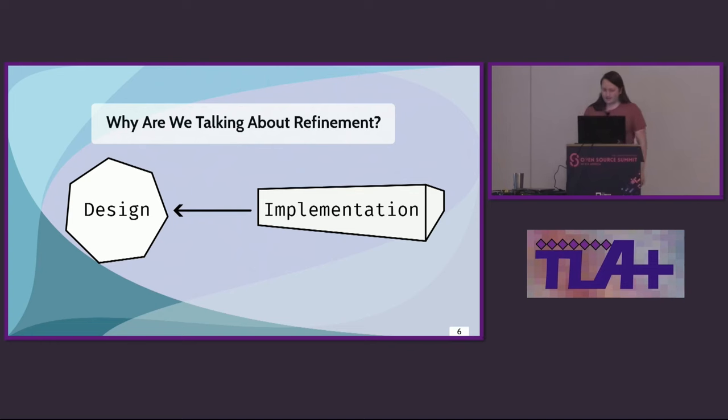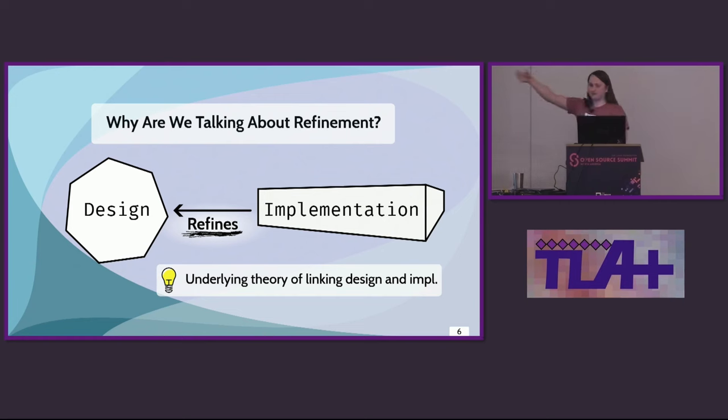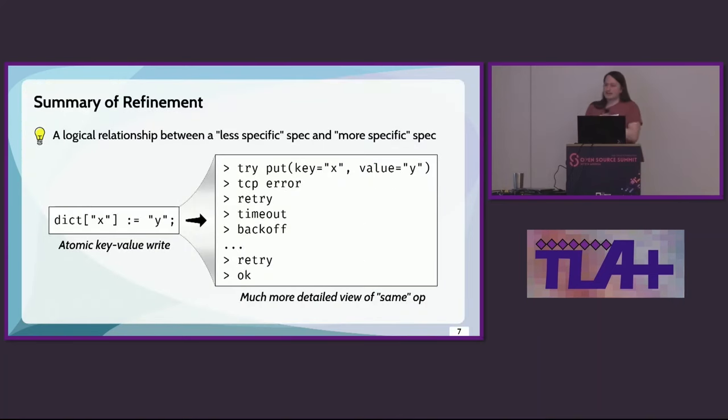So, first, why refinement? I think we kind of know at this point. But the implementation essentially of any design that represents that implementation refines that implementation. It's kind of the underlying theory, so it's important to think about that when we're dealing with all of these trace validation matching things. So, getting into refinement really quickly, one way of looking at it is imagine you have an atomic key value write, which is supposed to represent, I don't know, a key value store. We seem to like those. And that would be your specification. And on the right here, we have our implementation that does some kind of rest API call, a bunch of TCP junk happens, and eventually an OK happens. That's kind of just a more detailed view of the same thing.